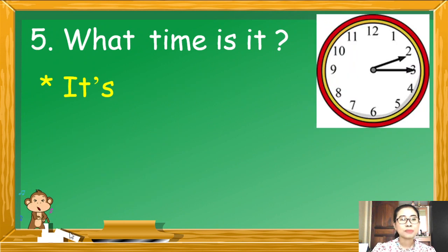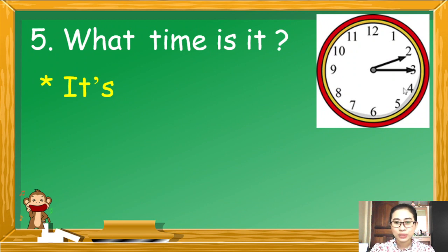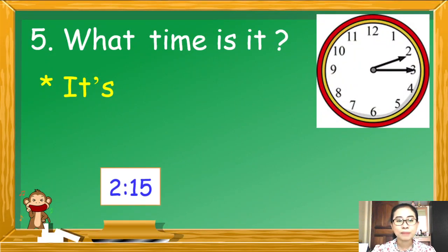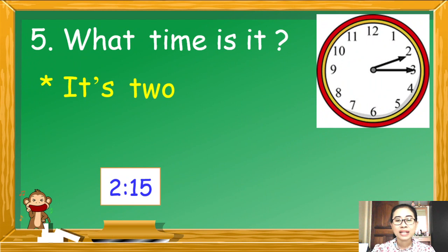Number 5: What time is it? ดูที่เข็มสั้นก่อนเลยค่ะ เข็มสั้นชี้เลข 2 เข็มยาวชี้เลข 3 เป็นเวลากี่นาทีค่ะ? เก่งมากค่ะ 15 นาที ดังนั้นเขียนเป็นตัวเลขได้คือ 2.15 นั่นเองค่ะ.